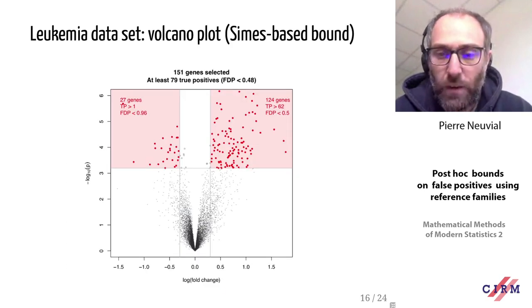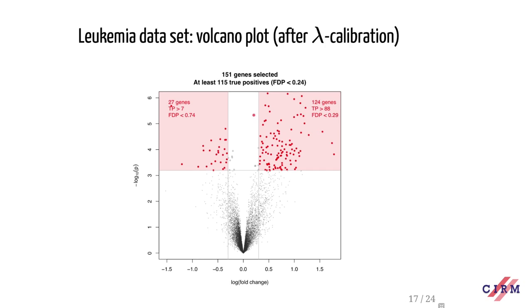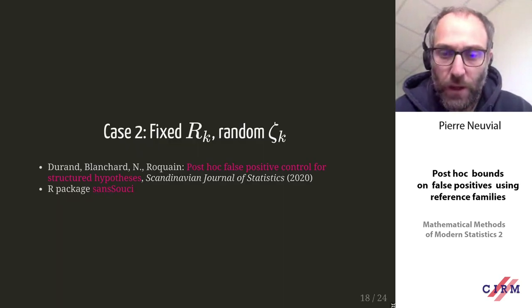Returning to the volcano plot application: with the Simes-based approach, we had at least 79 true positives among 155 selected. Applying randomization with the linear template, the guarantee improves to at least 115 true positives — with no extra assumptions; in fact, with one fewer assumption. This is a compelling illustration of the method's practical value.